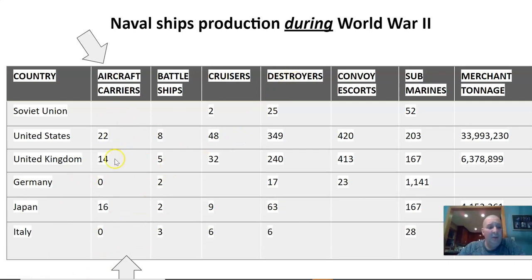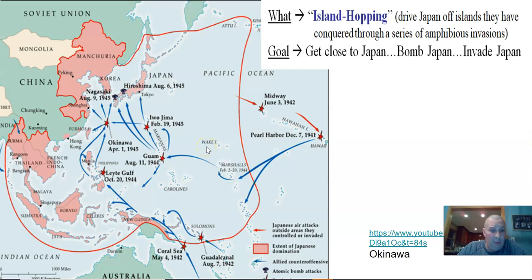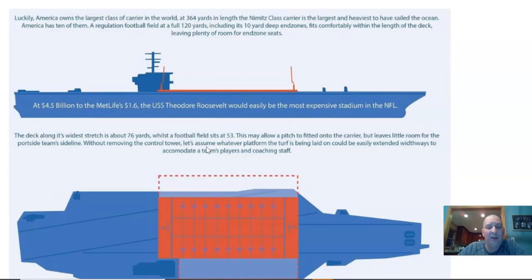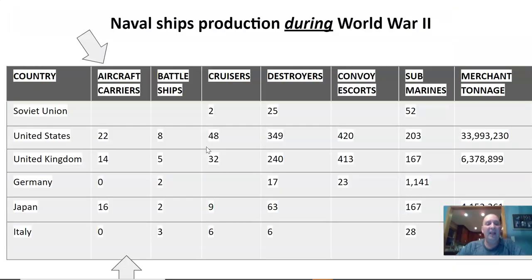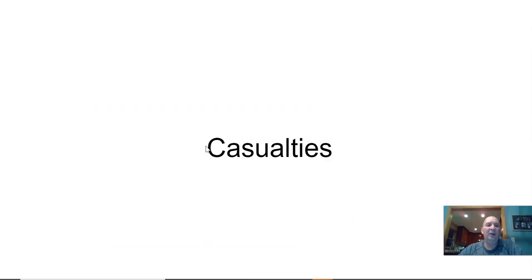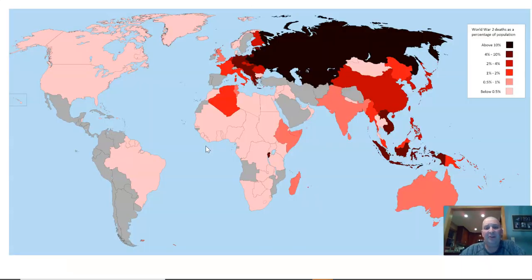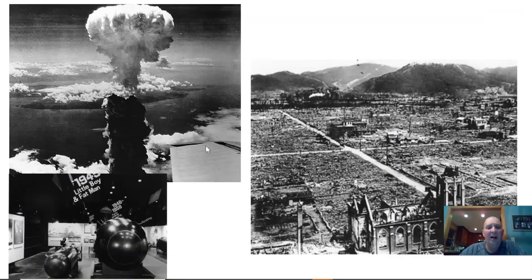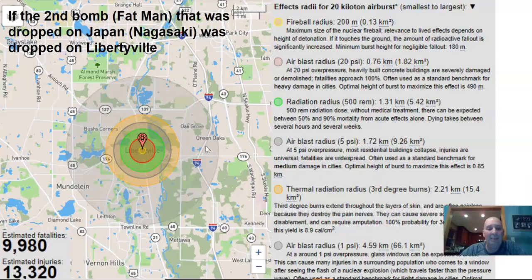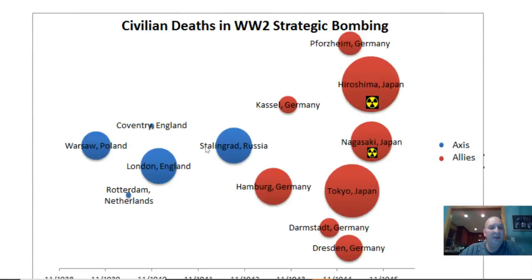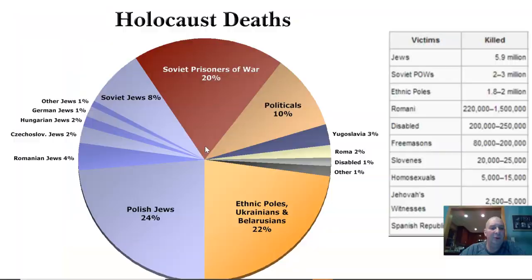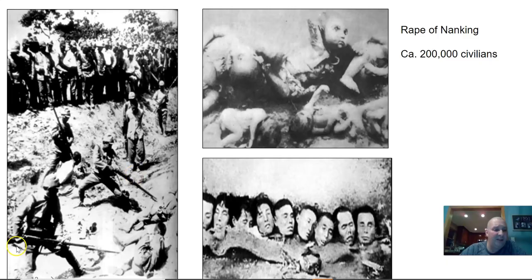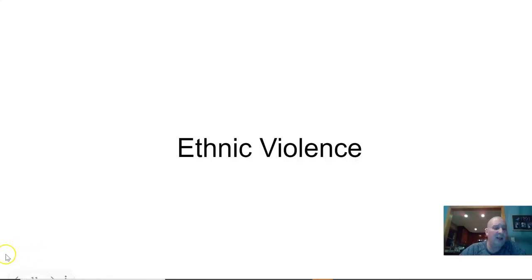That was a quick run through of World War II — the essential parts of the story for our conversation. Moving on tomorrow, we will talk about ethnic violence and the casualties, especially civilian casualties, and then we will talk about the bomb as well. Make sure you get those parts of your chart done. You should have some time in class today to work on that, and we will see you guys soon.